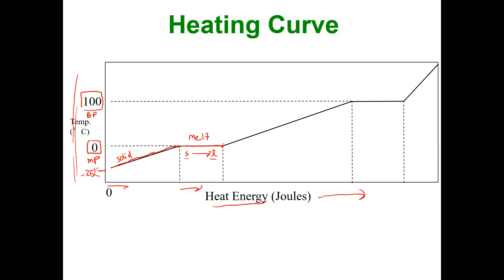If I keep heating the liquid up, the temperature rises from zero all the way up to 100 degrees Celsius. At 100 degrees Celsius, you no longer heat up the liquid — instead, a change of state begins. The heat added disrupts and overcomes intermolecular forces, providing more potential energy by separating the molecules. The curve flattens again at 100°C: it goes from a liquid to a gas, and that we call vaporization.